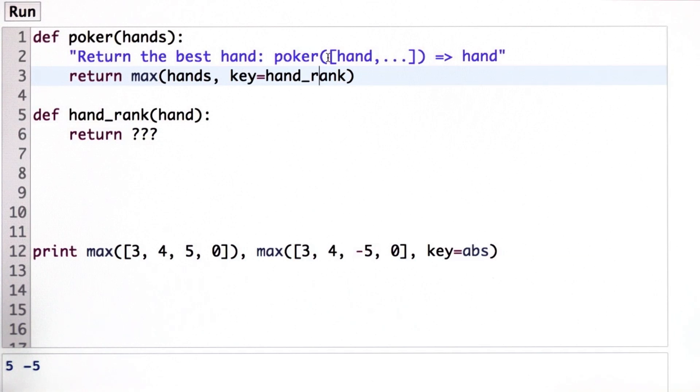The specification says return the highest ranking hand. And the function definition says return the max of the hands according to the hand rank, which is basically the same thing. It's easy to see that the implementation matches the specification.